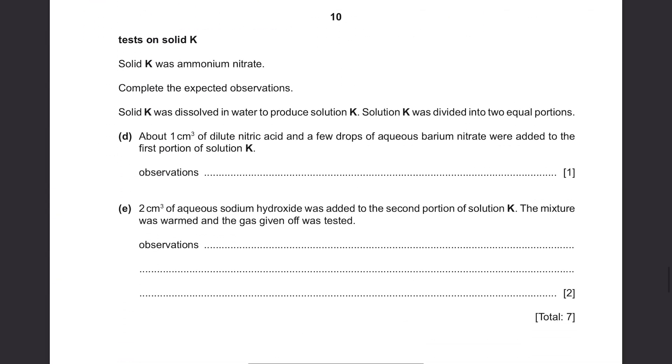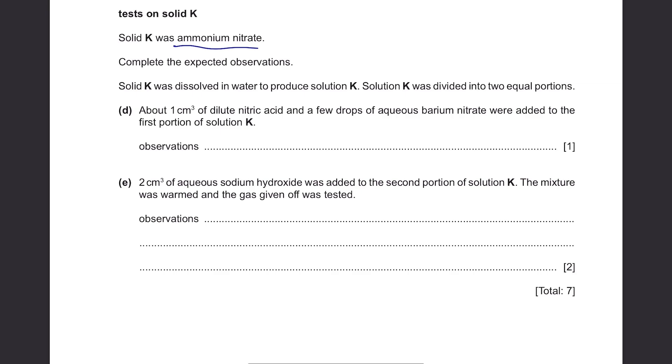Solid K was ammonium nitrate. Complete the expected observations. Solid K was dissolved in water to produce solution K. Solution K was divided into two equal portions. Part D. About 1 cm cubed of dilute nitric acid and a few drops of aqueous silver nitrate were added to the first portion of solution K. Again, this is a test for halide ions which are Cl-, Br-, or I-, but neither ammonium nor nitrate are halide ions. Therefore, for observations, you'll see no change.